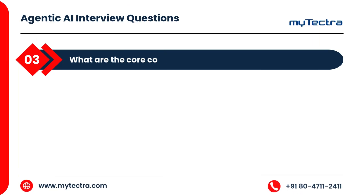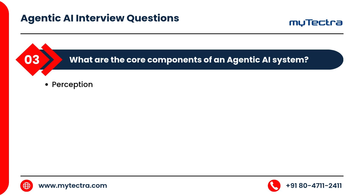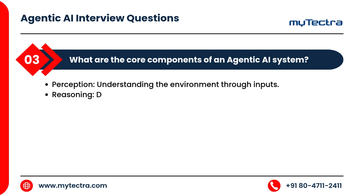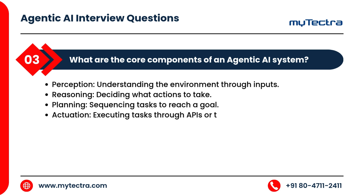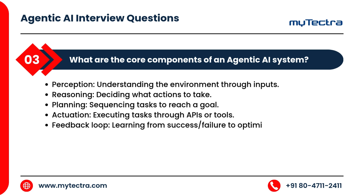What are the core components of an agentic AI system? Perception: understanding the environment through inputs. Reasoning: deciding what actions to take. Planning: sequencing tasks to reach a goal. Actuation: executing tasks through APIs or tools. Feedback loop: learning from success or failure to optimize performance.